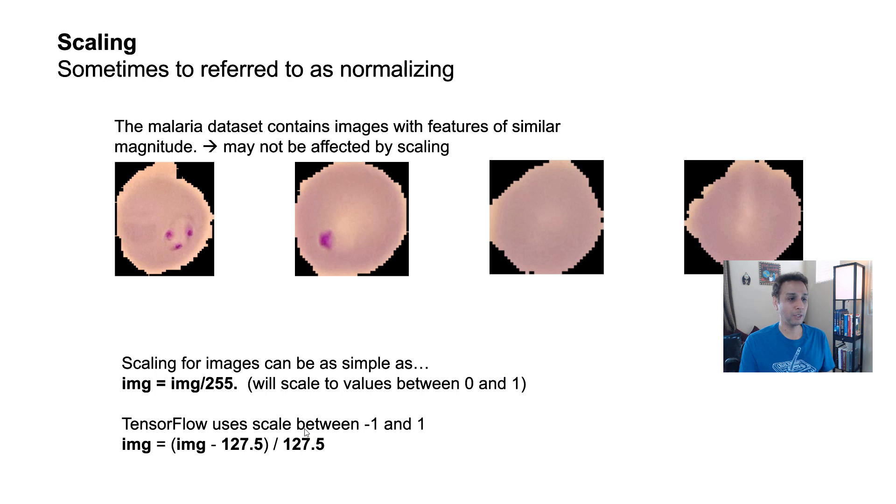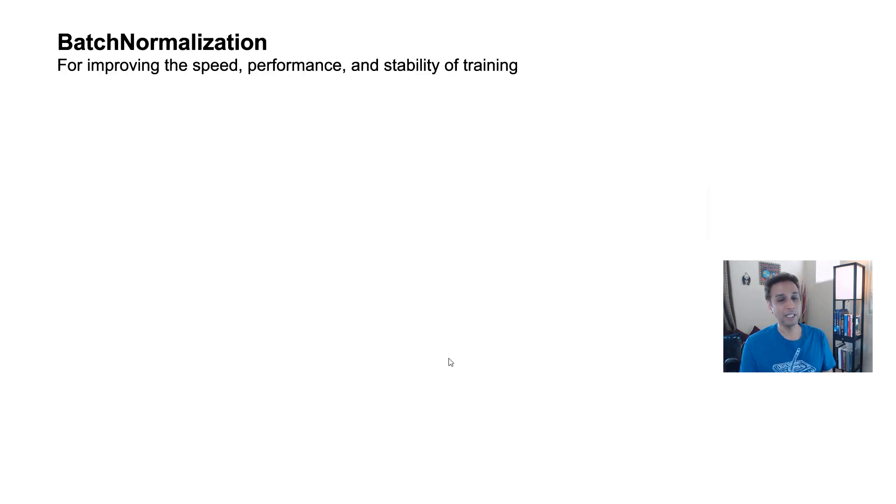Sometimes, like TensorFlow actually uses minus 1 to 1, so the way to do that is your pixel value minus 127.5 over 127.5. So this forces all the pixels to be between minus 1 and 1. It doesn't matter. Either way, you should be fine. The point is to bring everything to the right scale, to a common scale.